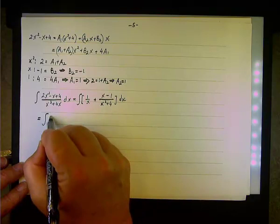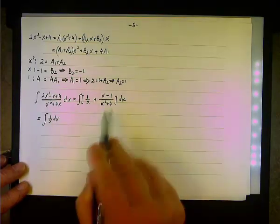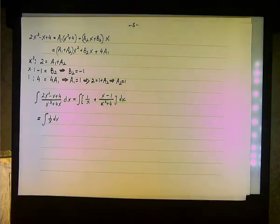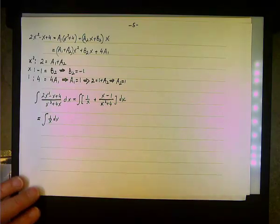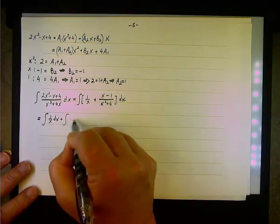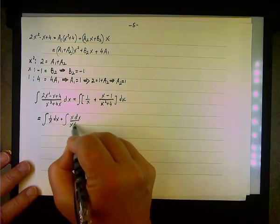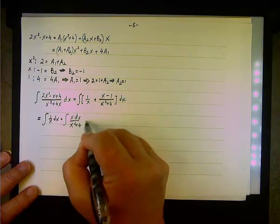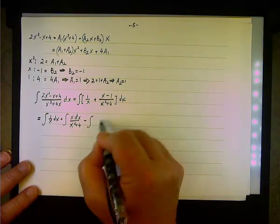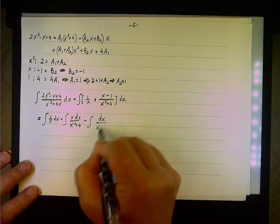I'm going to break down this integral into three separate integrals. The first is the integral of 1/x dx. The second is x dx over (x² + 4) — splitting (x − 1)/(x² + 4) into x/(x² + 4) minus 1/(x² + 4). And the third integral is dx over (x² + 4), which we subtract.